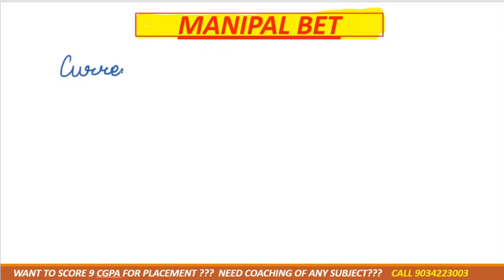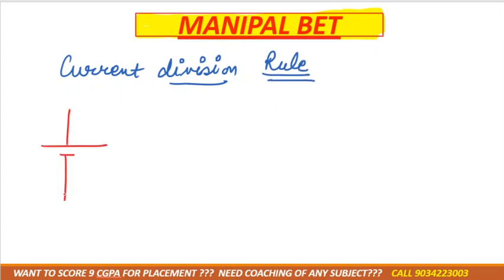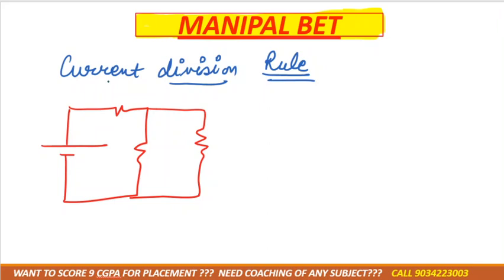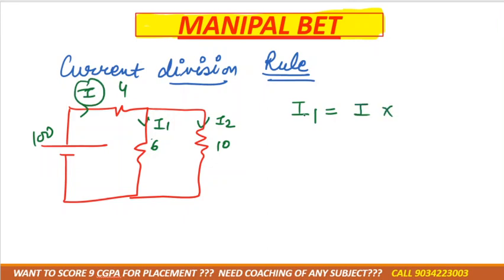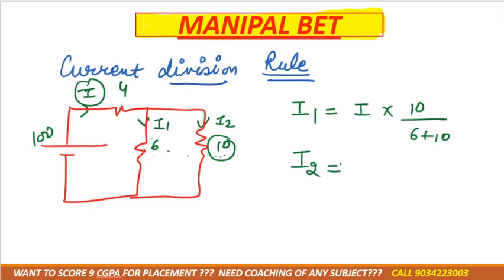The next formula is the current division rule, applicable only in parallel circuits — you cannot apply it in a series circuit because current does not divide in series. For example, if total current I flows and splits into I1 and I2 across two parallel resistors: I1 = I × (opposite branch resistance) / (sum of parallel resistances), so I1 = I × 10 / (6 + 10).